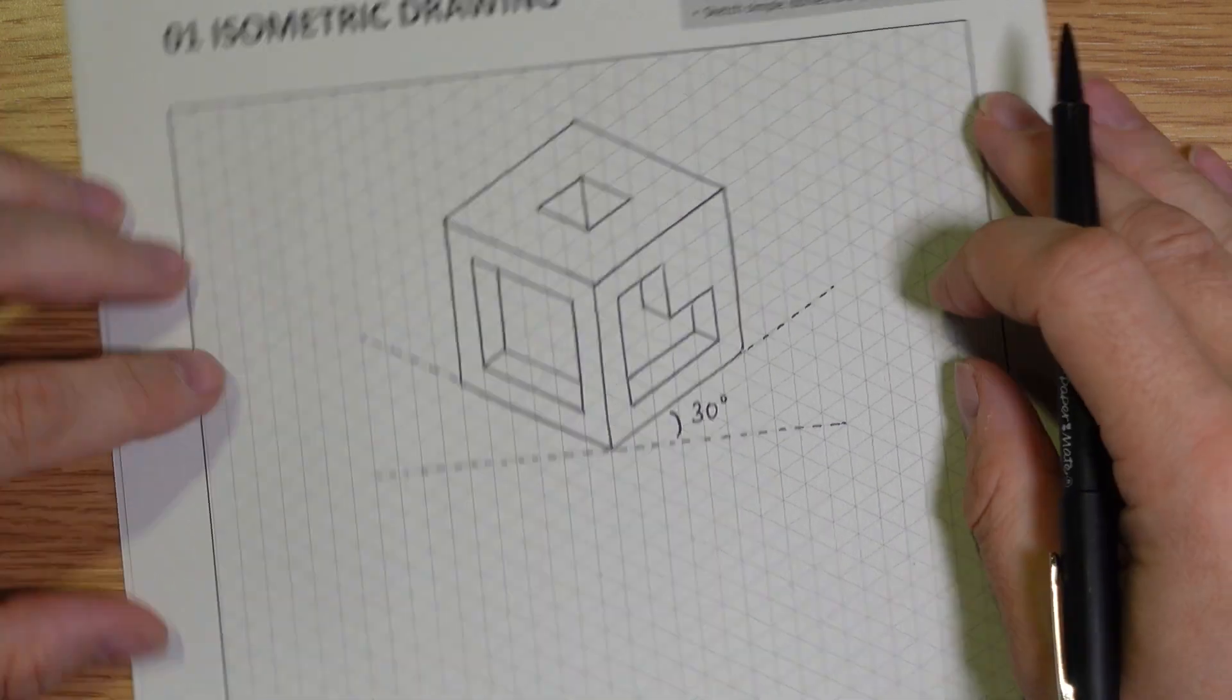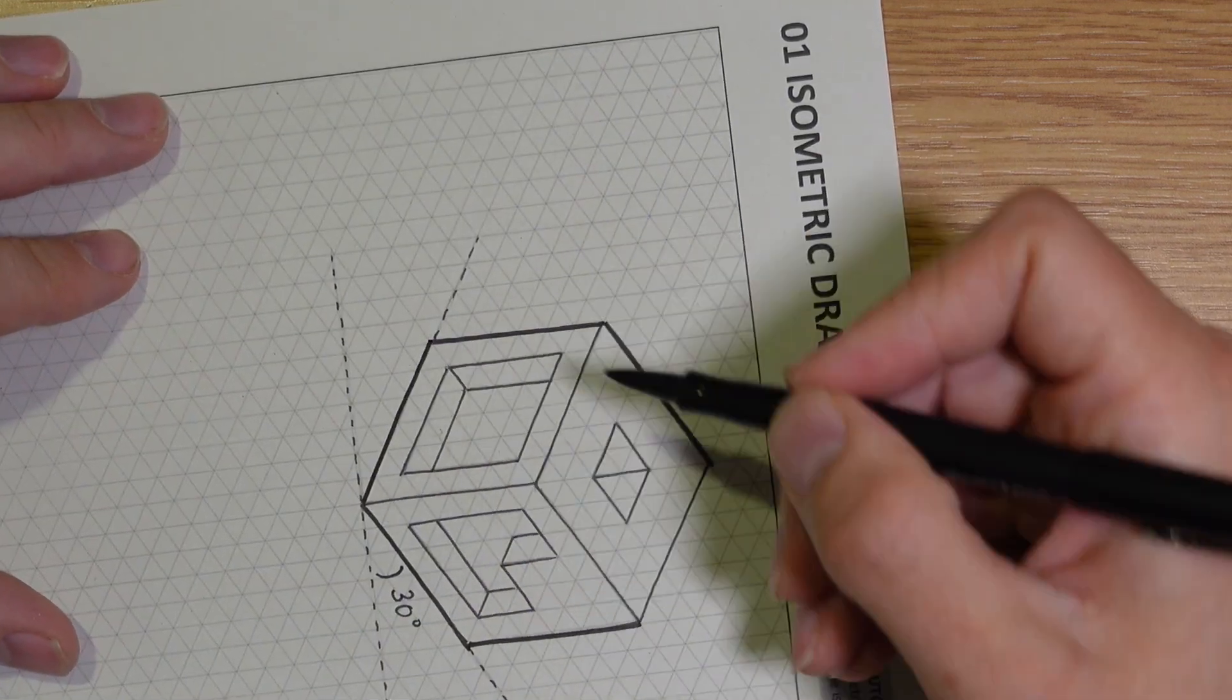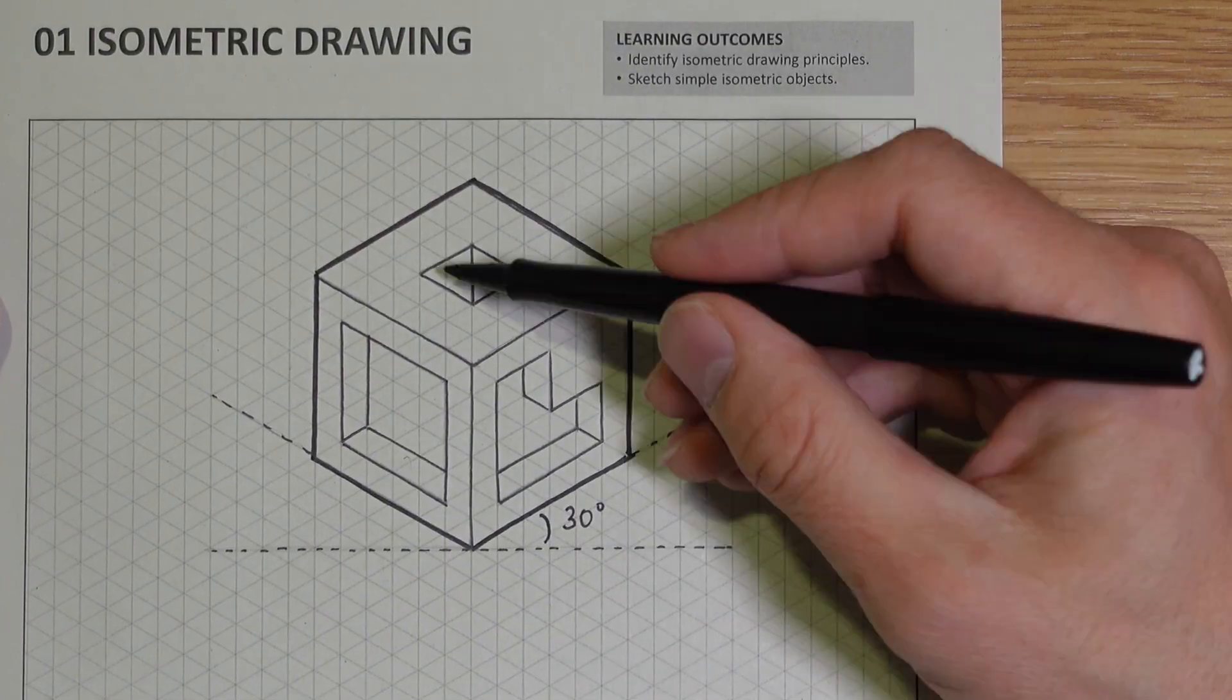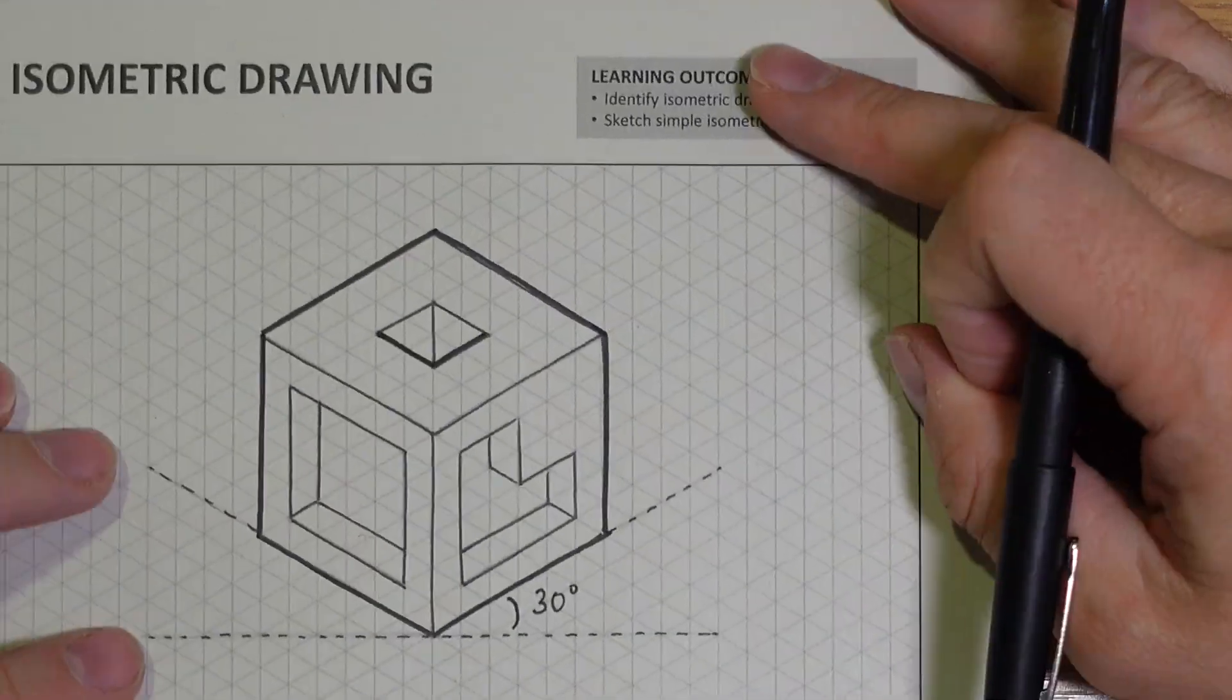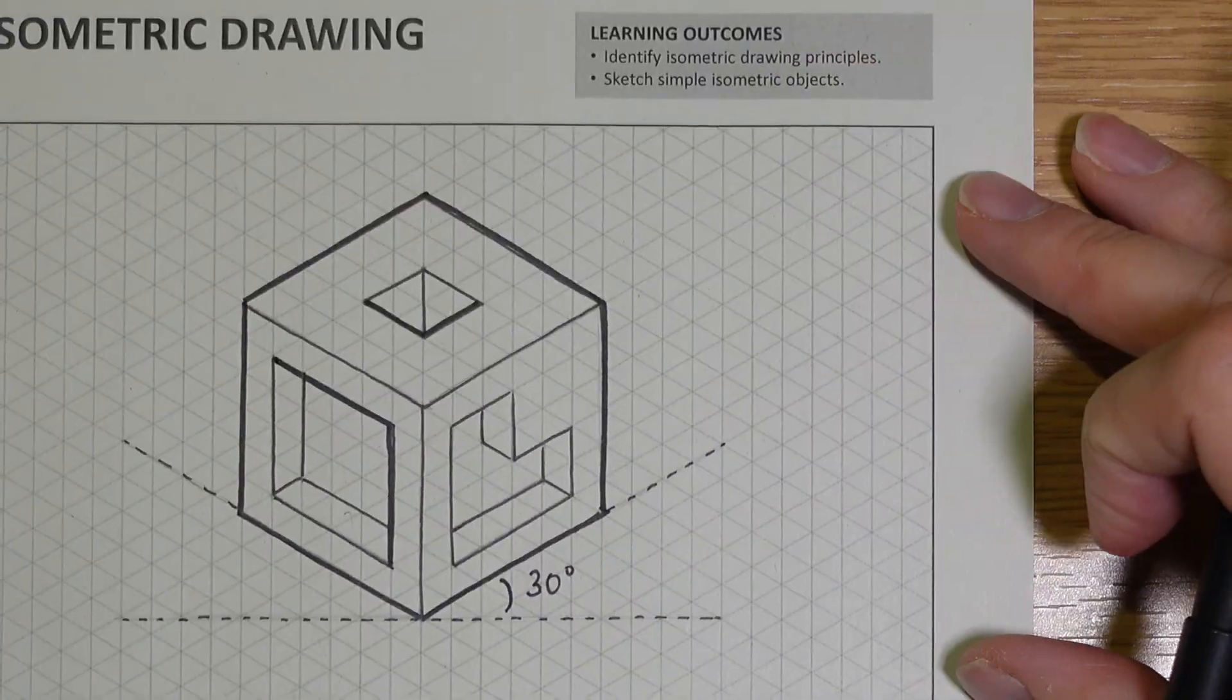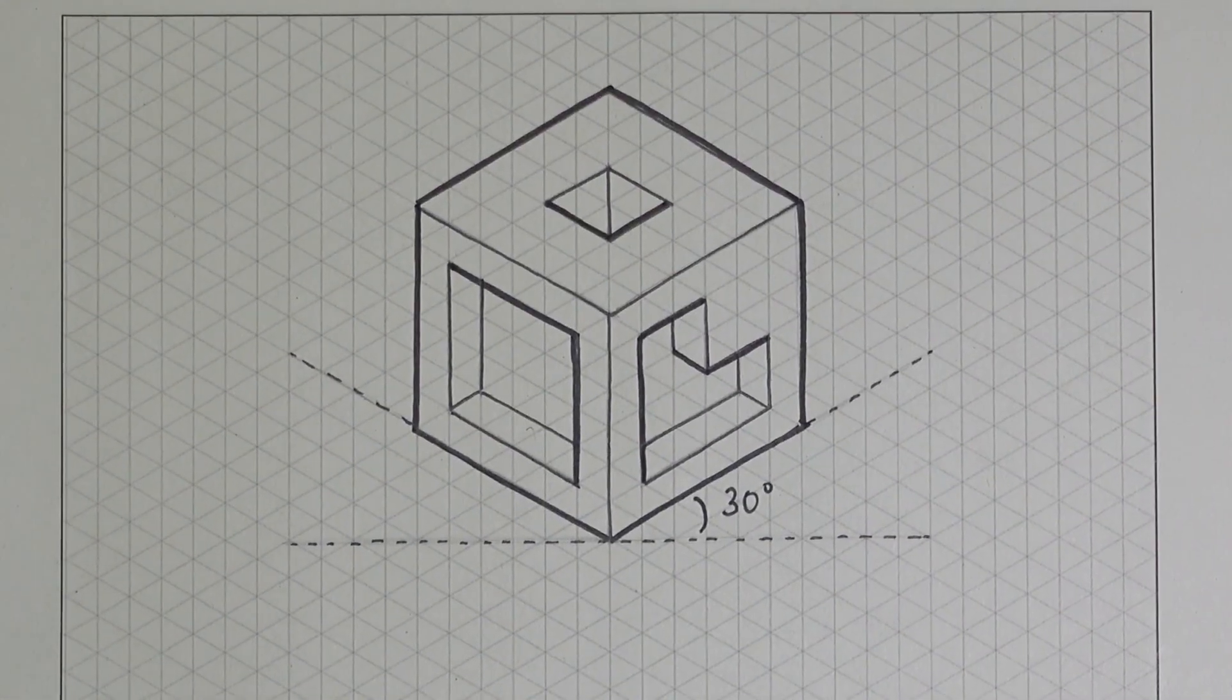So now have a go at adding these heavier lines. It's easier if you have a thicker pen for this, but you can just use your current pen. It just might take a little longer to thicken the lines. Also try doing this freehand if you can, but it's also fine to use a ruler if needed.